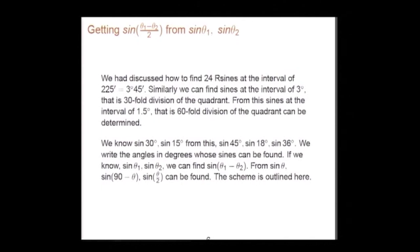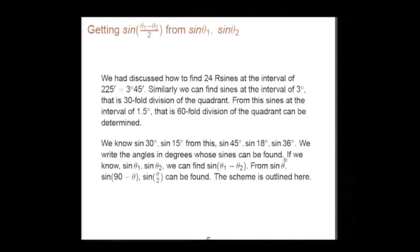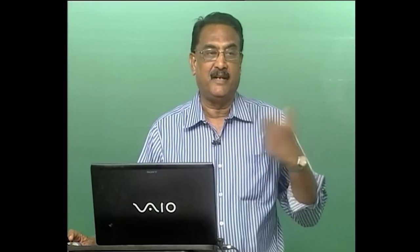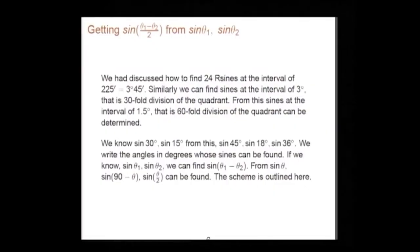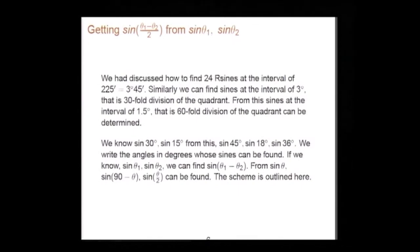We have discussed how to find 24 R-sines at intervals of 225 minutes (3° 45'). Similarly we can find sines at the interval of 3 degrees — a 30-fold division of the quadrant. From these, sines at 1.5-degree intervals (a 60-fold division) can be found, since if you know sin θ you can find sin(θ/2). We know sin 30°, sin 45°, sin 18°, and sin 36° — Bhaskara gave the formula. So we have the angles whose sines can be found, and all the tools are ready.